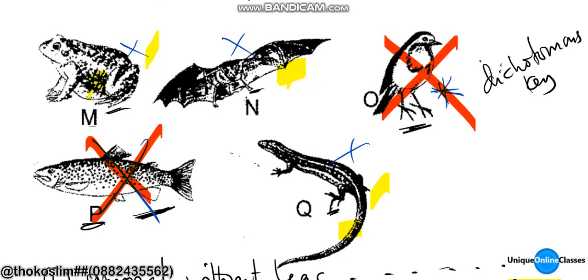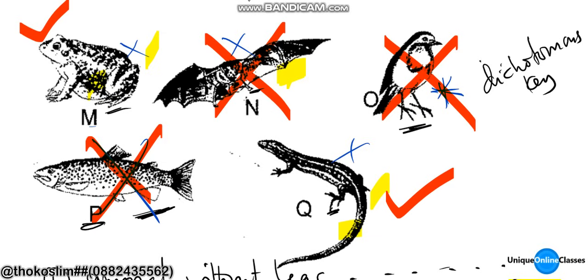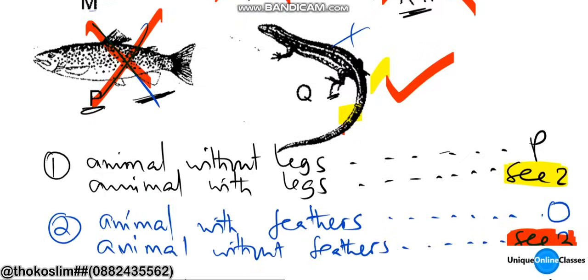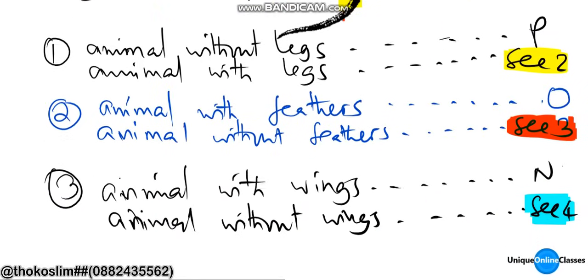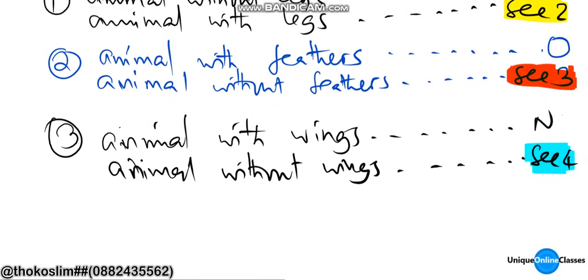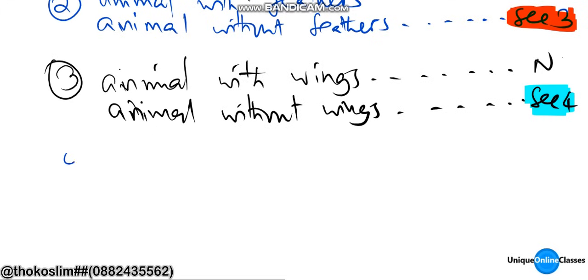That's what you can see. Step number four: animal — you can see — step number four.